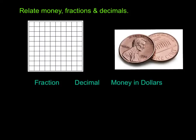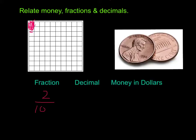Here, we're going to relate money, fractions, and decimals. As you can see in our picture, we have two cents, or two pennies, each worth one cent. On our chart, that is going to be the same as two of those boxes colored in. That's our one-hundredths chart. Our fraction would be two one-hundredths, because one hundred pennies make a dollar.